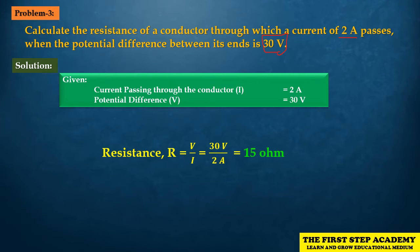The given values are: current passing through the conductor I = 2A, and potential difference V = 30V. To find resistance, we will use Ohm's law. Ohm's law states V is equal to I into R.